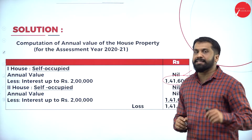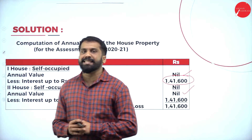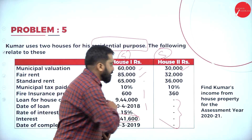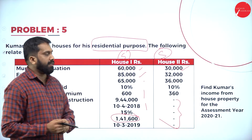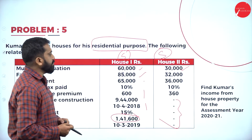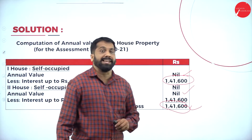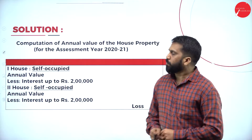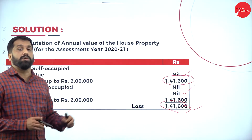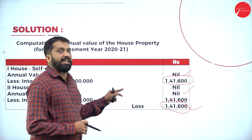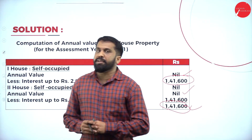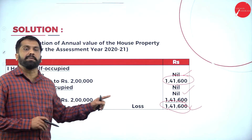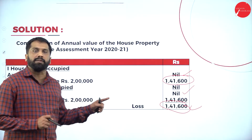Your net annual value is nil. The interest part is 1,41,600, so your answer is nil but you have a loss of 1,41,600. For the second house there is no interest information, so your total answer is a loss of 1,41,600 — this is loss from house property, not income. This type of question may come for five marks, testing concept knowledge.